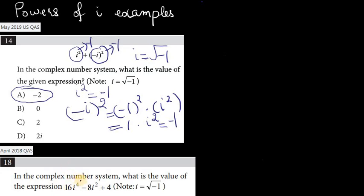Assuming you've given it a go, let's just take a look at this expression right here. So i raised to the power 4, as we know from the last video, is a 1. i squared, we know, is a negative 1.